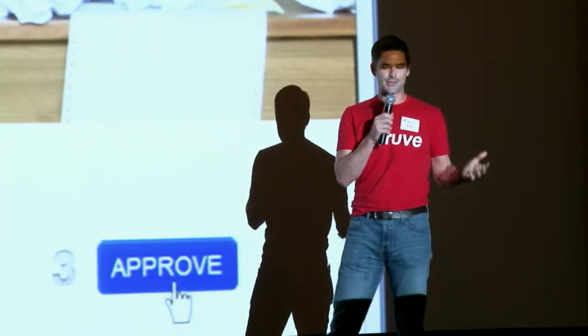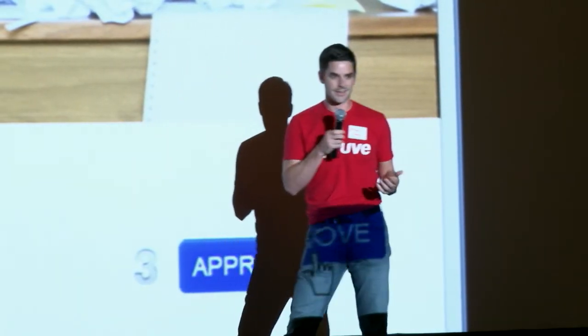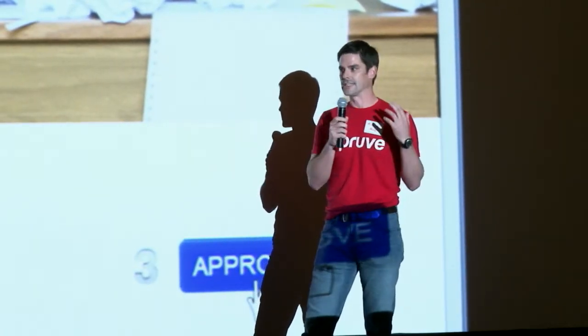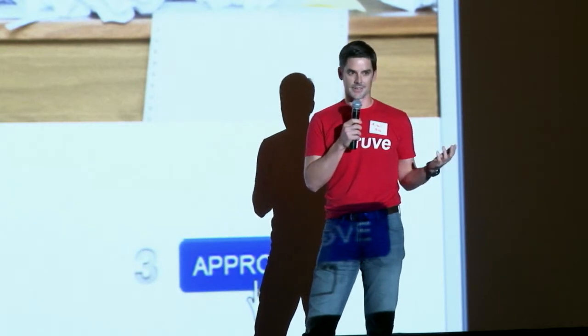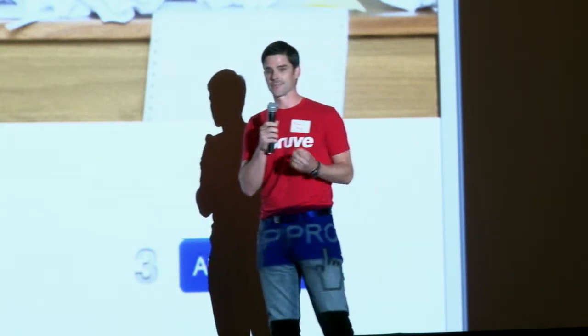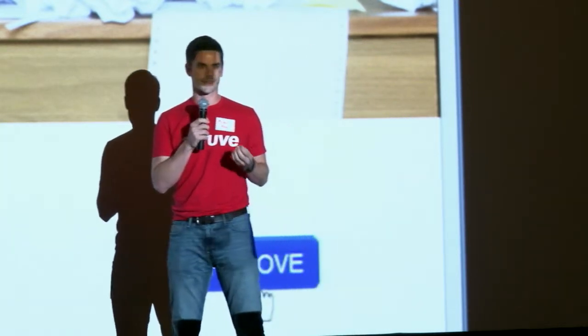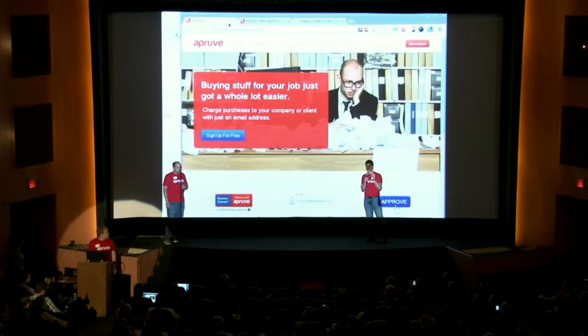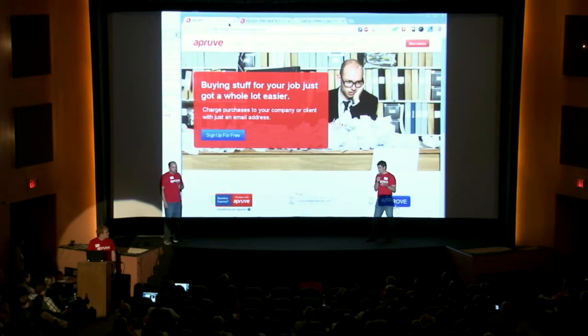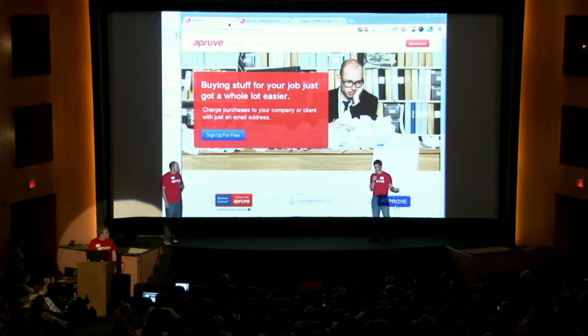So buying stuff for your job can be a pain. It can be insecure, as you just saw. It can be fraudulent. At the very least, it's a waste of everyone's time reconciling expenses. Approve is out to fundamentally change the way businesses buy things online. Think PayPal, but for business spending. You click the Approve button at checkout and you can charge your purchase right to your company or client without needing a credit card. It's kind of like having a virtual corporate account that you and your employees and contractors can take anywhere Approve is accepted.